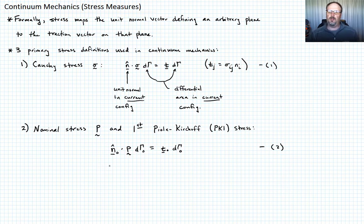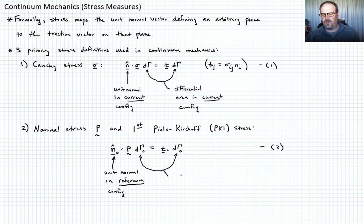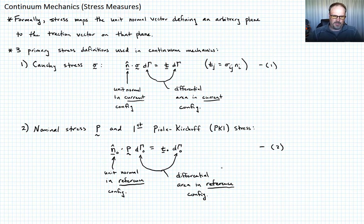So let's look at what we can learn from this equation. This is the unit normal now in the reference configuration. And then these quantities, these d_gamma_naughts, this is the differential area in the reference configuration. So that essentially everything is written in terms of the reference configuration.